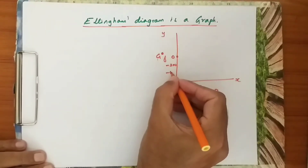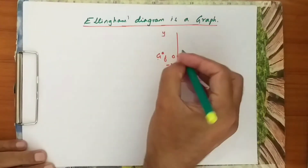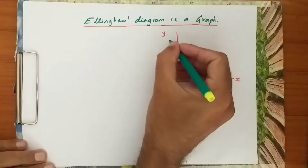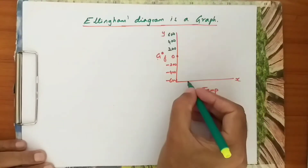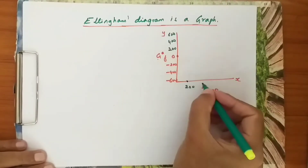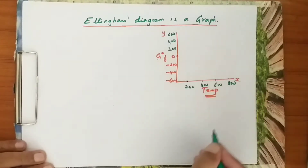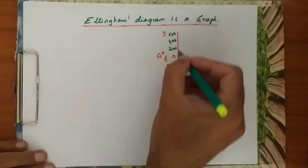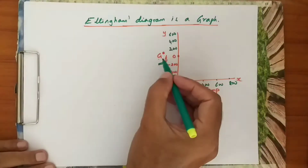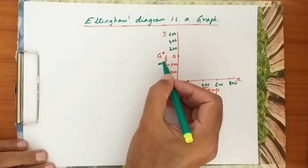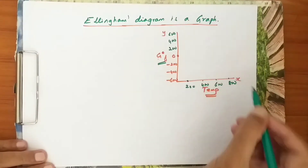The y-axis has values like −200, −400, −600 and so on as negative values, with positive values above zero. The x-axis has the temperature. So the y-axis plots the ΔG°f values — that is, the change in free energy values for the formation of various metal oxides — and the x-axis is the temperature.